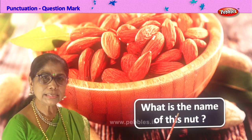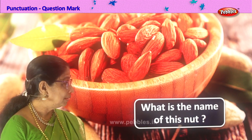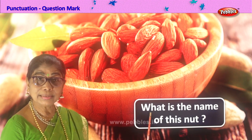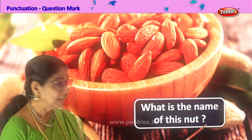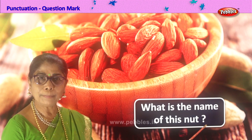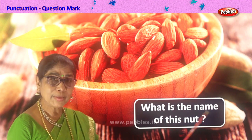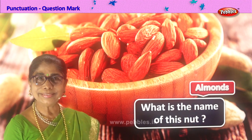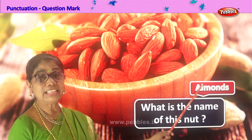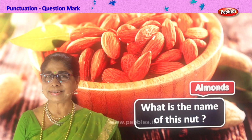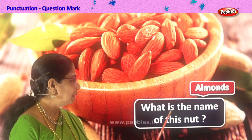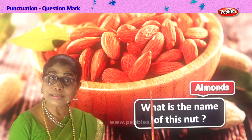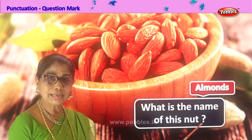What is the name of this nut? The sentence begins with a capital letter, but this sentence is asking a question, so we end it with the punctuation question mark. What is the name of this nut? Almonds. So we write here 'almonds.' Yes, you like almonds? It's a very nice, tasty nut. The sentence is asking a question, so it ends with a question mark.